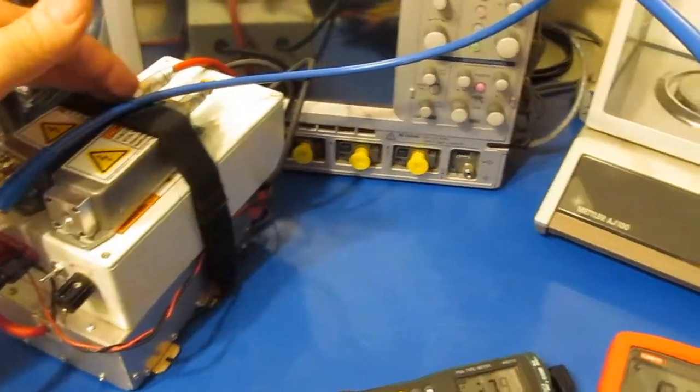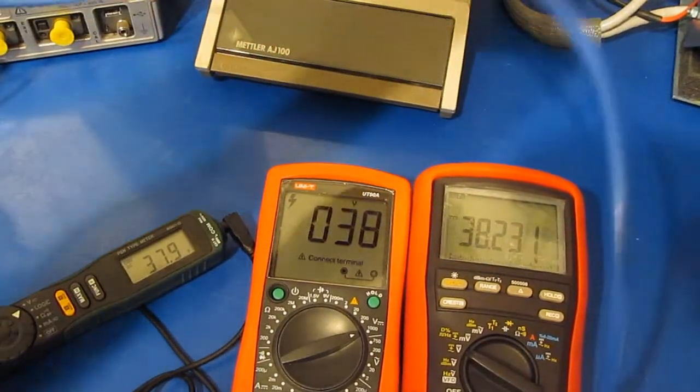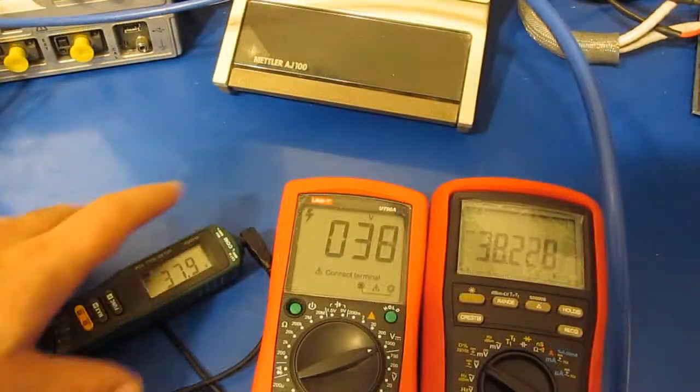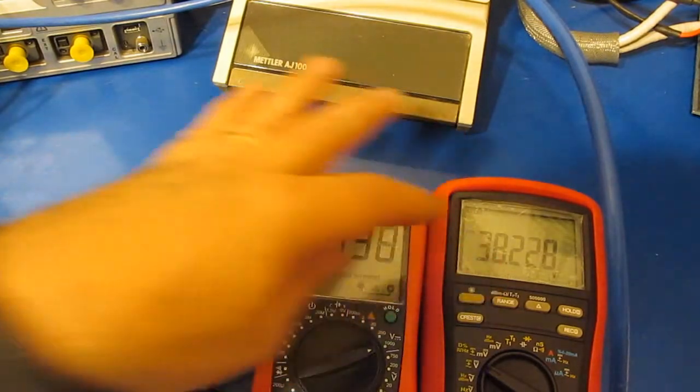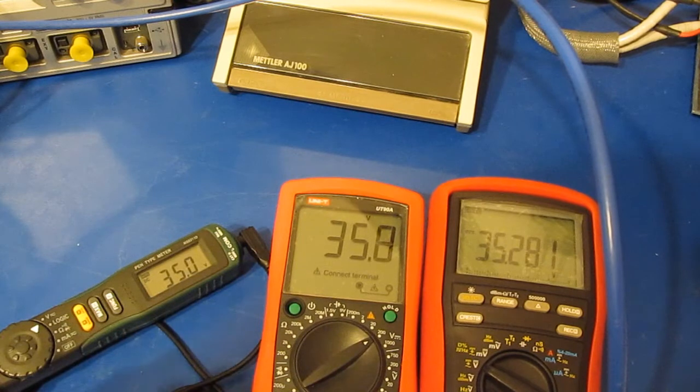Alright so you can see I've got the high voltage power supply out. All three meters are attached again in parallel. We'll see how the Maztec compares with the UT90A and the Brymen. Of course the UT90A is a manual ranging meter.